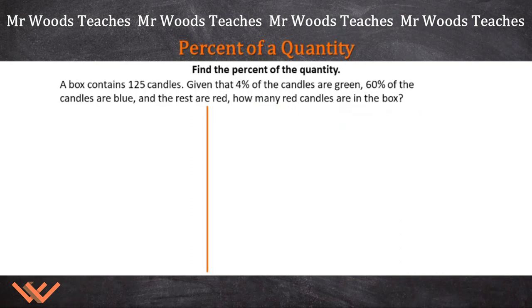We can write it out the traditional way, where we have 64% of 125 equals what? And we can see the equation for that. And here we have 64 hundredths times 125 over 1.